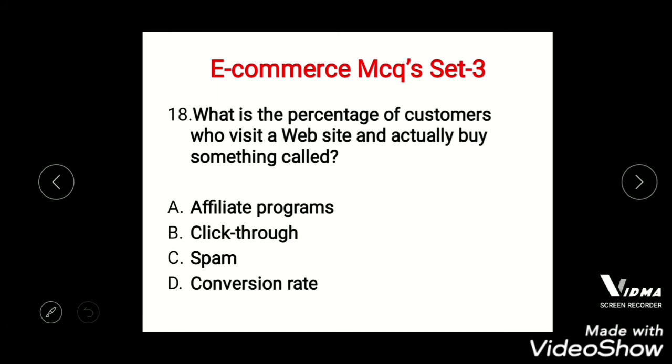Question 17: What is the percentage of customers who visit a website and actually buy something called? Options: A) Affiliated programs, B) Click-through, C) Spam, D) Conversion rate. The right answer is D, conversion rate.